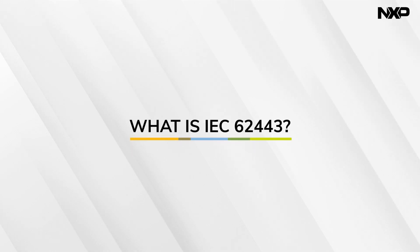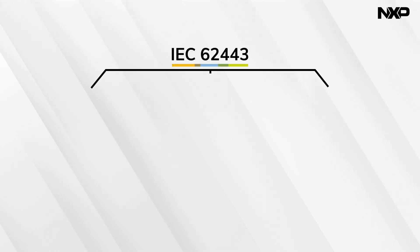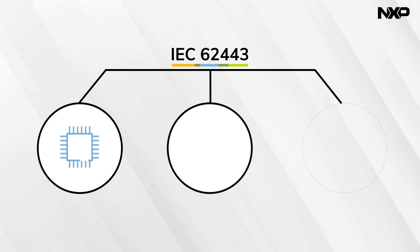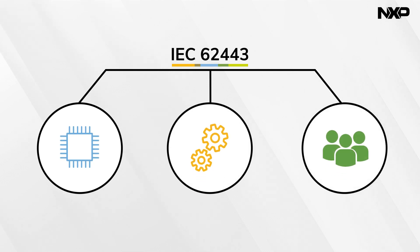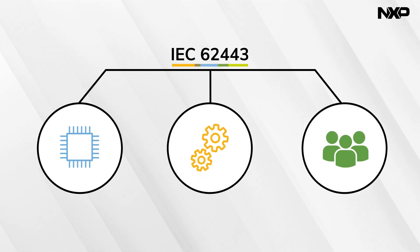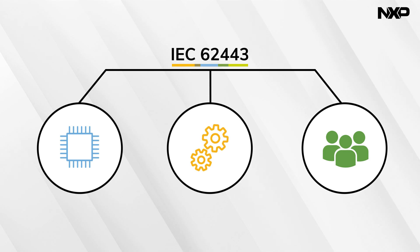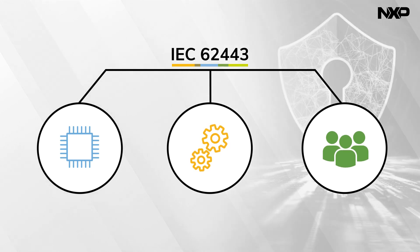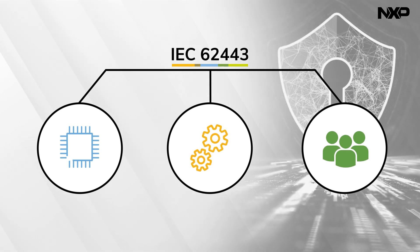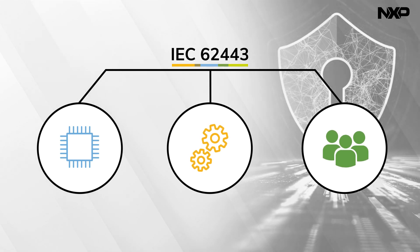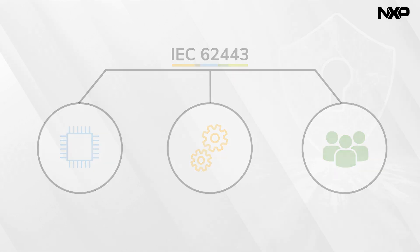IEC 62443 is a series of standards that address cybersecurity for industrial IoT systems and is based on best practices for the technology, processes, and users of these systems. Implementing these standards can prevent attacks or mitigate their effects.